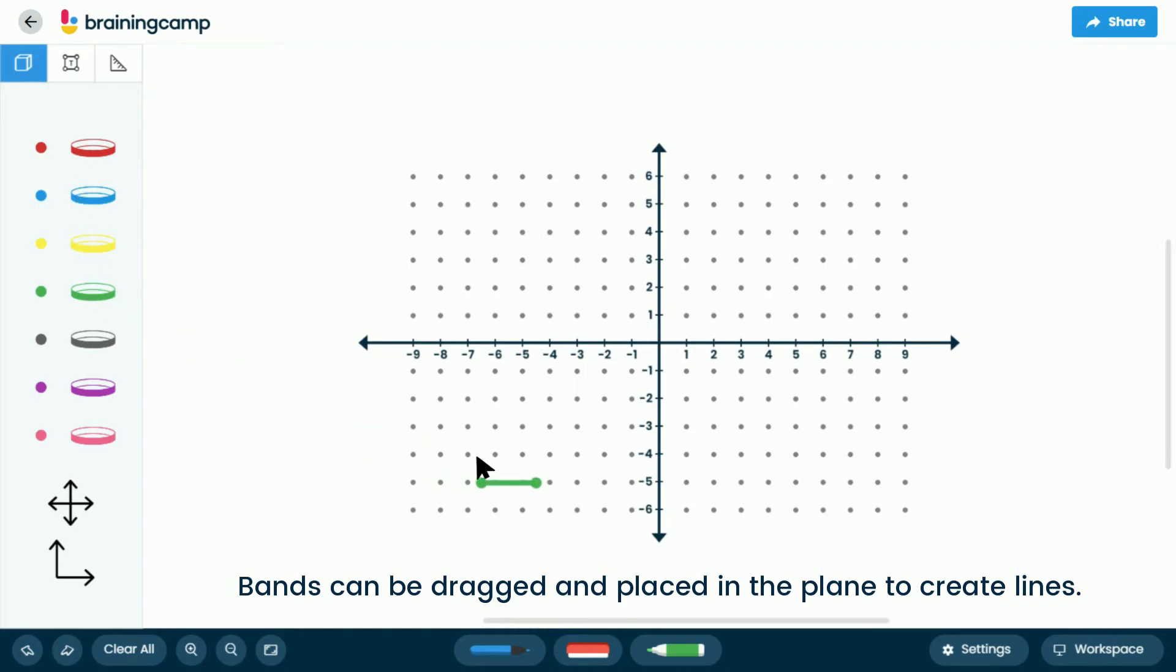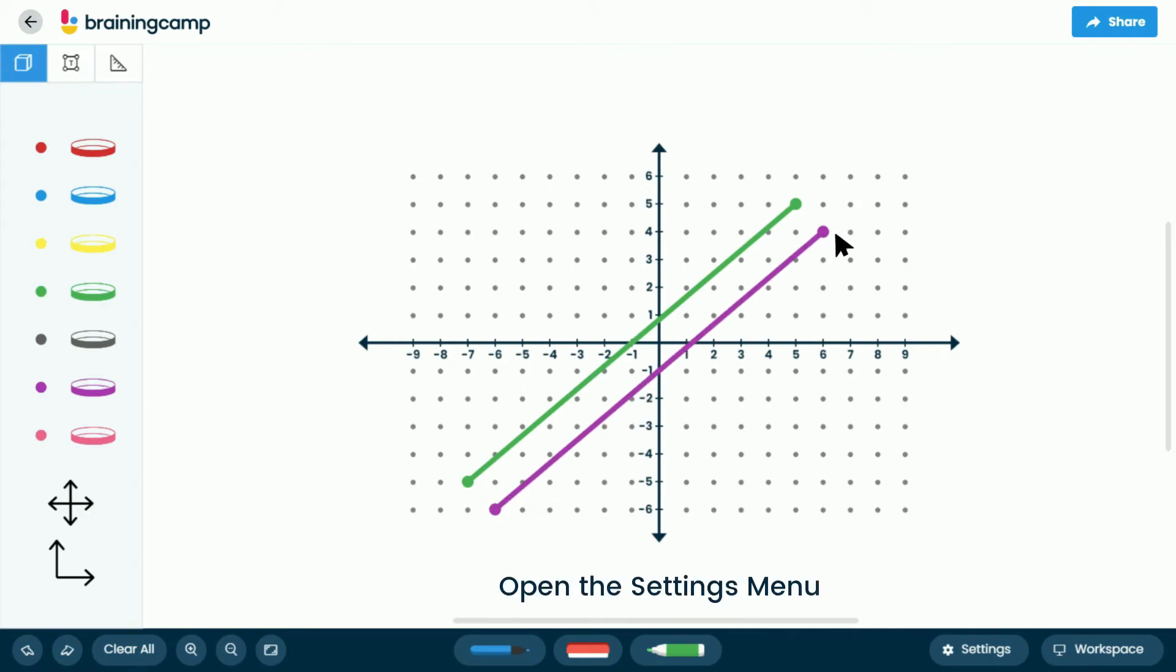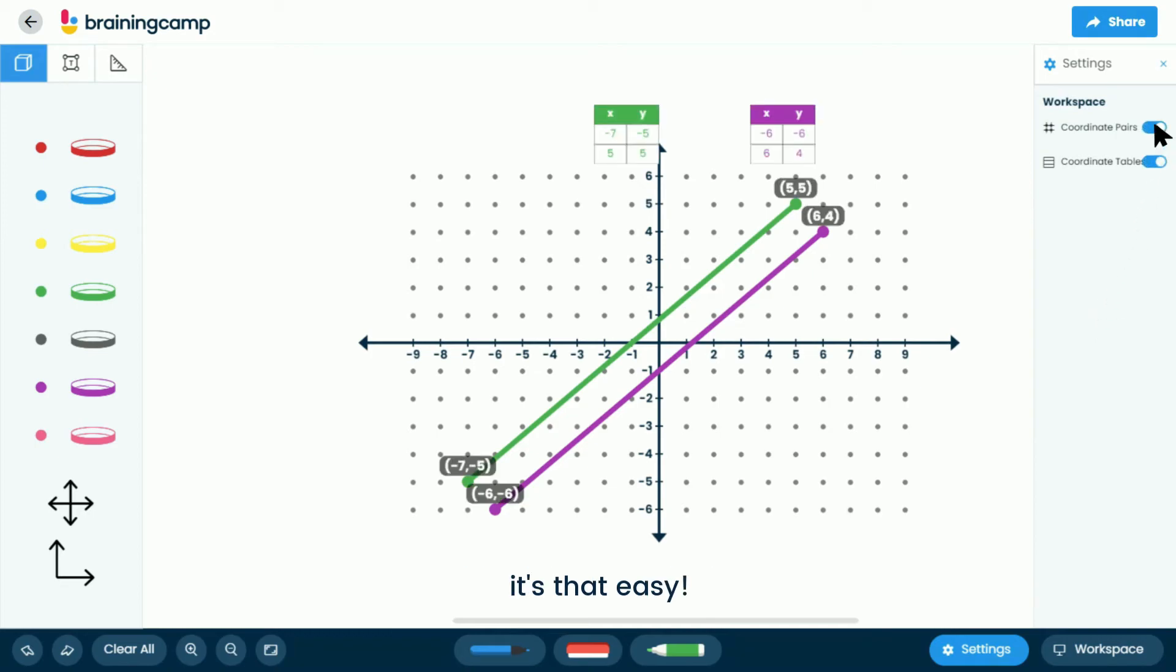Bands can be dragged and placed in the plane to create lines. Open the settings menu to display the tables of values used to determine the lines. It's that easy!